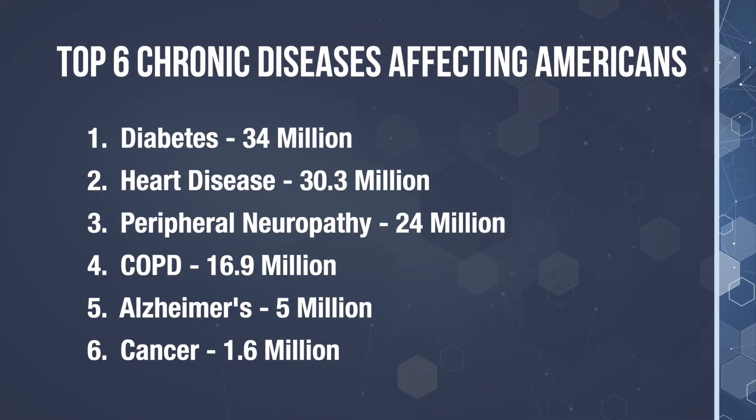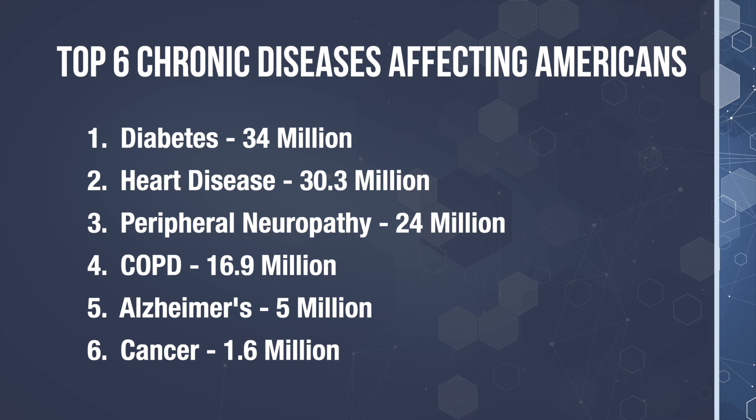Do you know that 1 in 13 people will develop peripheral neuropathy in the US? In fact, it's among one of the top 6 chronic diseases that affect Americans. So let's take a look at where it lands. The number 1 disease that affects the most Americans is diabetes, affecting 34 million Americans.